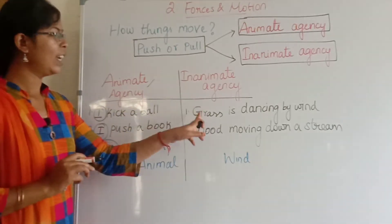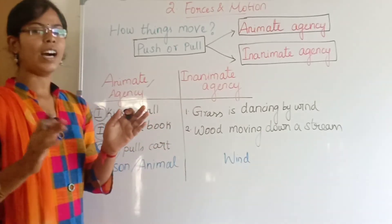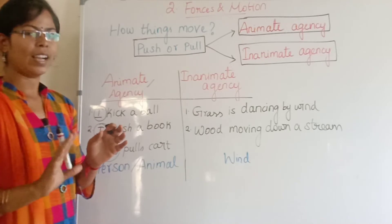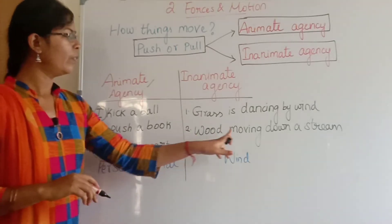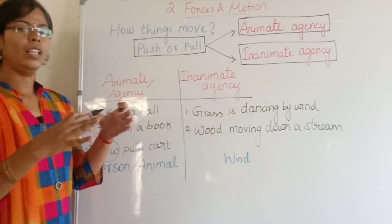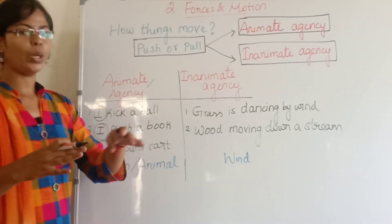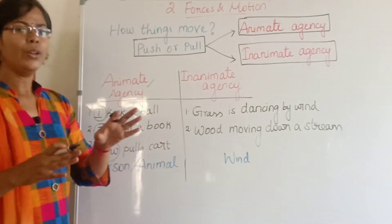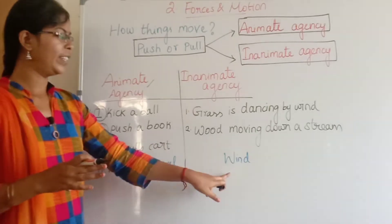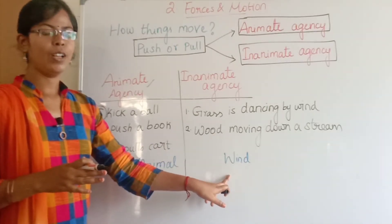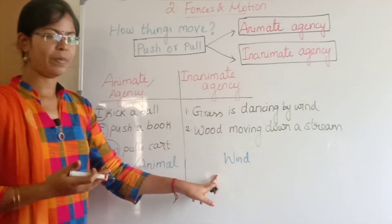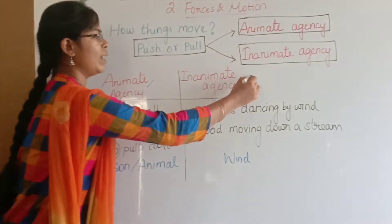On the other hand, grass is dancing by the wind. One tree is moving down a stream, carried along by the flowing of the river. Wind is a non-living factor, so when a non-living factor causes motion, it is called inanimate agency.